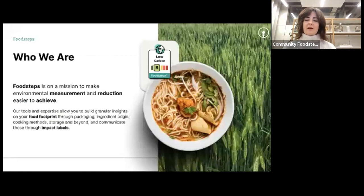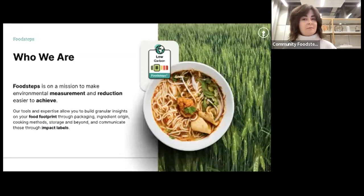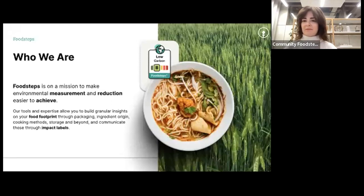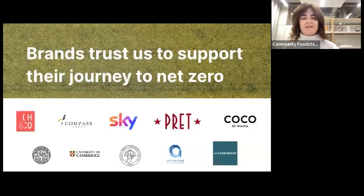For those unfamiliar with FoodSteps, we offer a range of services — both off-the-shelf and bespoke — to help food businesses get to grips with their food data and make more meaningful actions towards net zero and whichever environmental targets you're working towards. This includes carbon labels that rate products on an A–E basis, scope three assessments, and many other bespoke offerings. Here are some of our wonderful clients — a varied roster of organizations who trust us to help them measure, reduce, and communicate their food and beverage impact at scale.